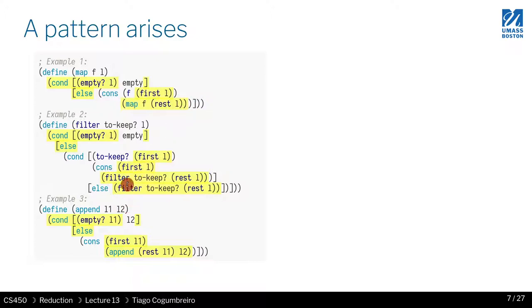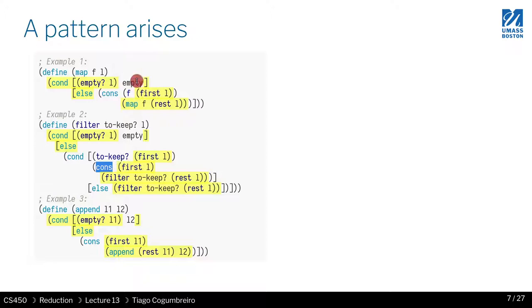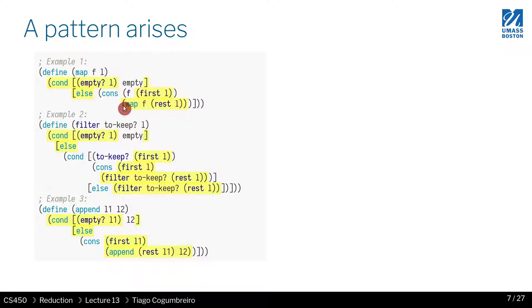Here we have a conditional, and then a way to combine the first element and the recursive call — either by creating a pair or skipping the first element. But we still need to access two things: the first element and the recursive step. To build the n+1 case, we always need the first element and the recursive call on the rest. We see this same pattern over and over in all three instances.